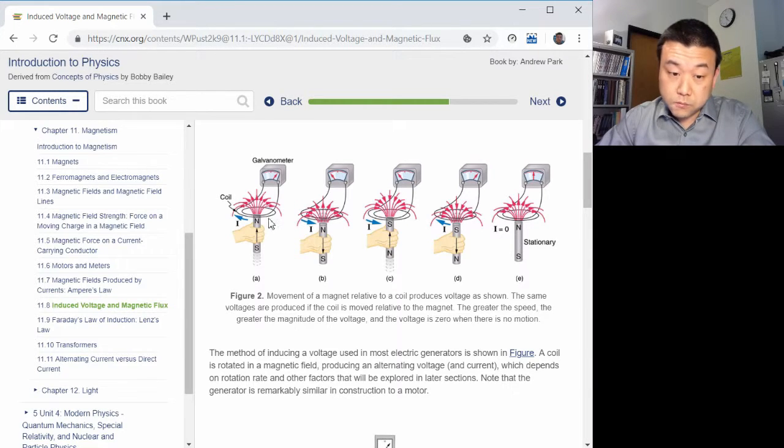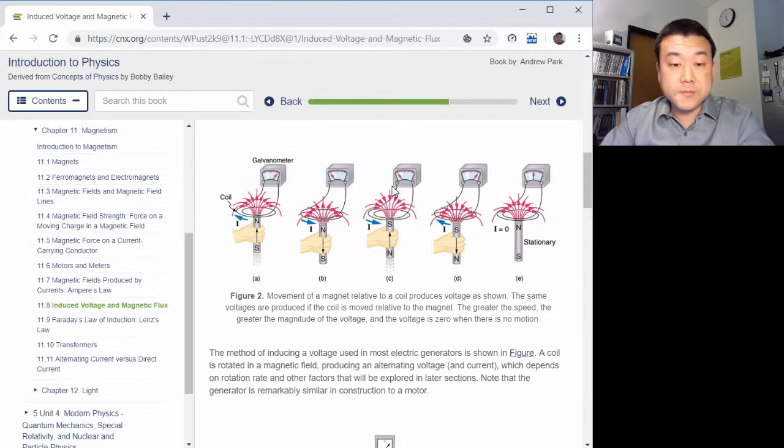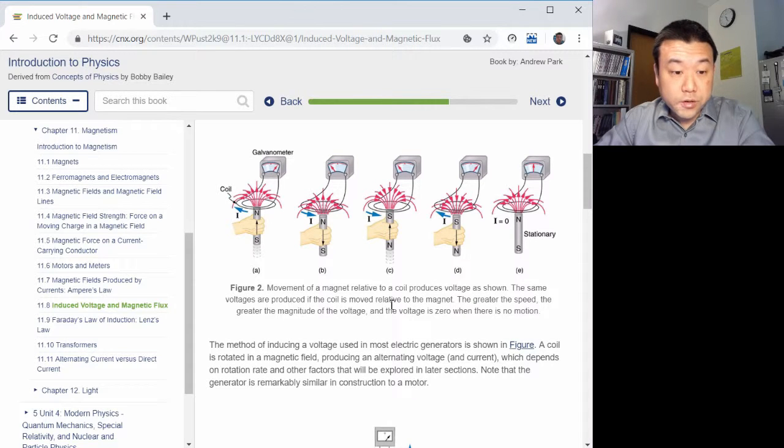Imagine a coil of wire with no battery or nothing connected here. This is a meter that's measuring how much current is flowing through the thing, or how much voltage is being induced, depends on the exact setup. And as you move a magnet around this coil, you will see this needle move around. If the magnet is standing still, then nothing will happen. This needle will be just in the middle. But if you move the magnet towards it, the needle goes one way. And when you move the magnet the other way, the needle goes the other way, and so on. This is the basic illustration of what we call Faraday's law that describes the induced voltage. And please read through the rest of the section.